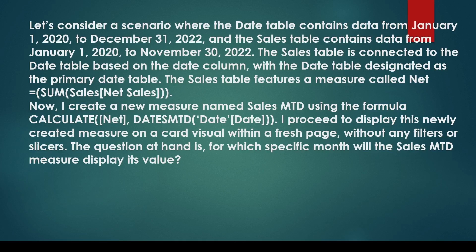You may be asked a scenario-based question. Consider a scenario where a date table contains dates from the 1st of January 2020 to the 31st of December 2022, and the sales table contains data from the 1st of January 2020 to the 30th of November 2022. The sales table is connected to the date table based on the date column, with the date table designated as the primary date table and marked as a date table.